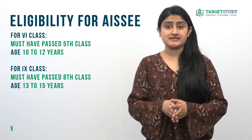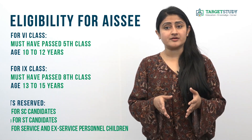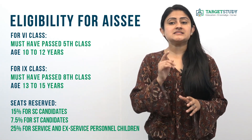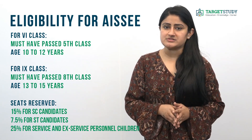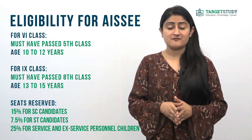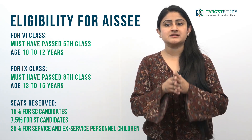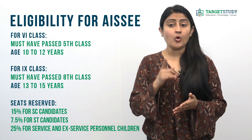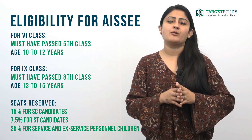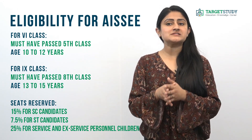Candidates will be selected for Sainik school purely on the basis of their performance in the exam. However, 15% of the total seats are reserved for Scheduled Castes and 7.5% for Scheduled Tribes. Out of the remaining seats, 67% will be reserved for boys from the state in which the Sainik school is located. The remaining 33% of seats will be open to boys from other states and union territories in the ratio of their male population. Any unutilized seats in this category will be merged with home state seats.